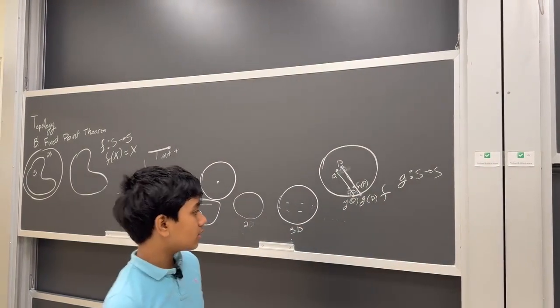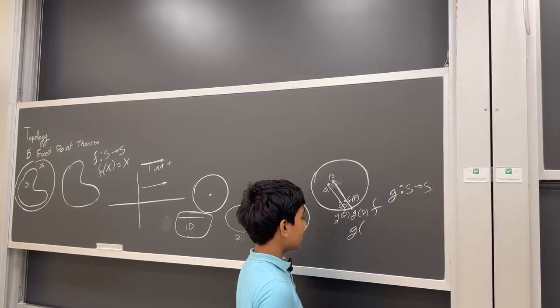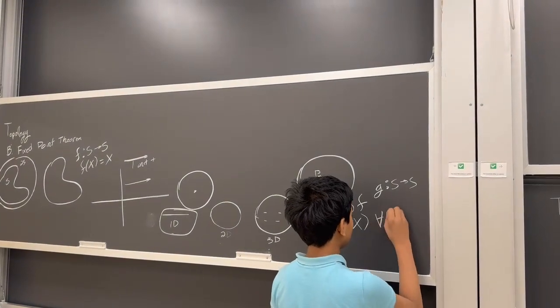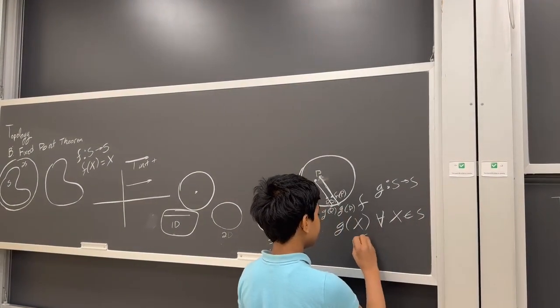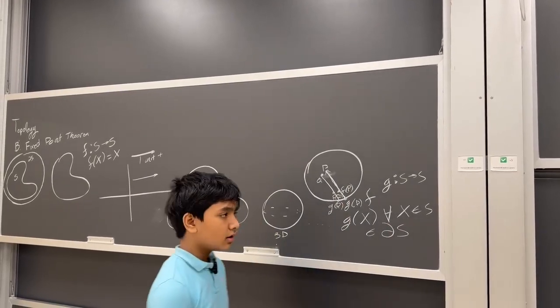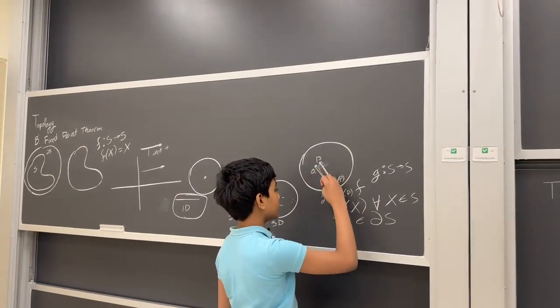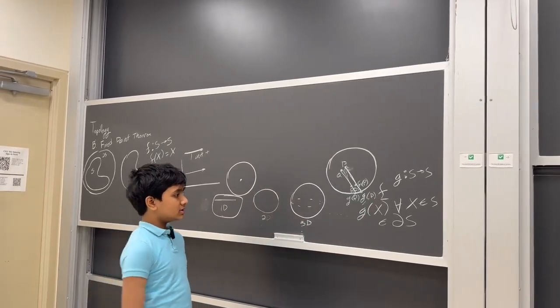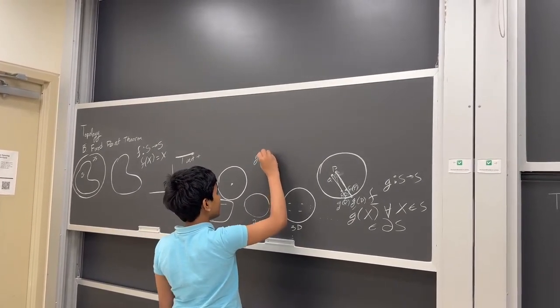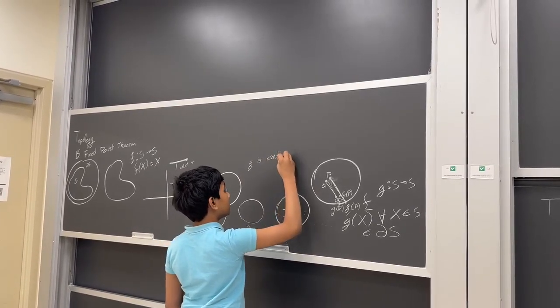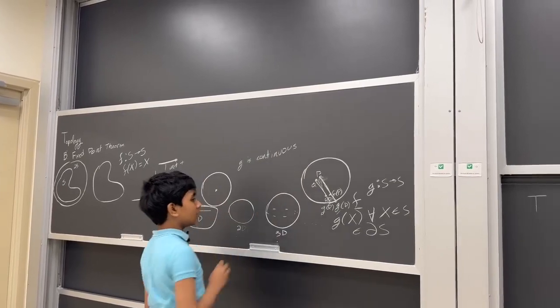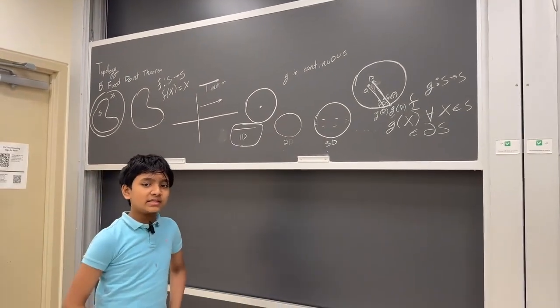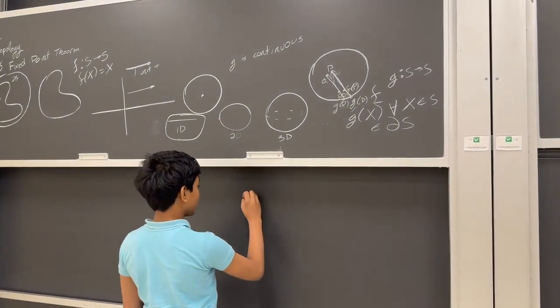So logically, g of every point for all points in the set is inside the boundary of the set. Of course. So, g also appears to be continuous because it's just sort of an extension of f. So g is continuous, right? But g, for all g of x, every output of the function g of x is on the boundary of the set.